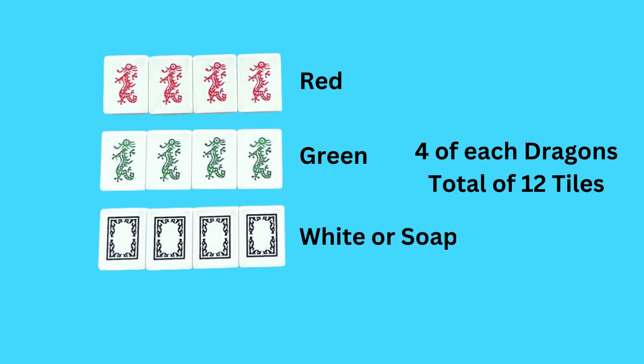The significance of these characters or symbols is said to have significance in the Chinese culture. And finally, we have our white dragon, also known as soap, for a total of 12 dragons in all.